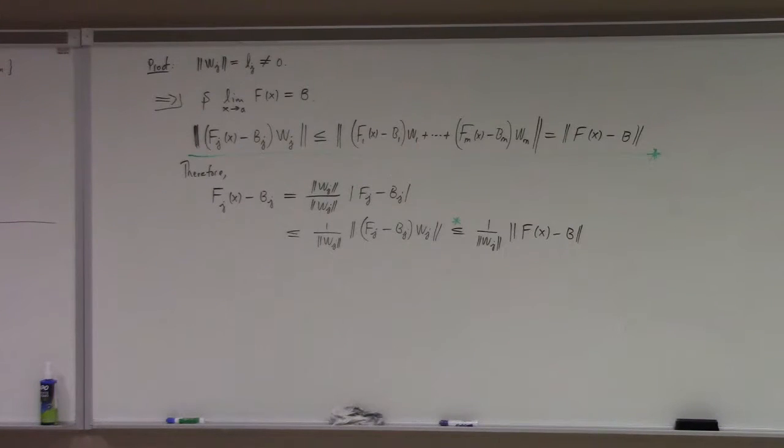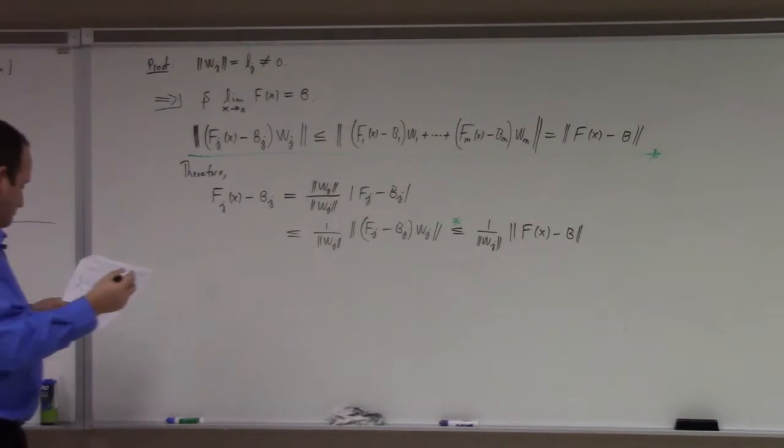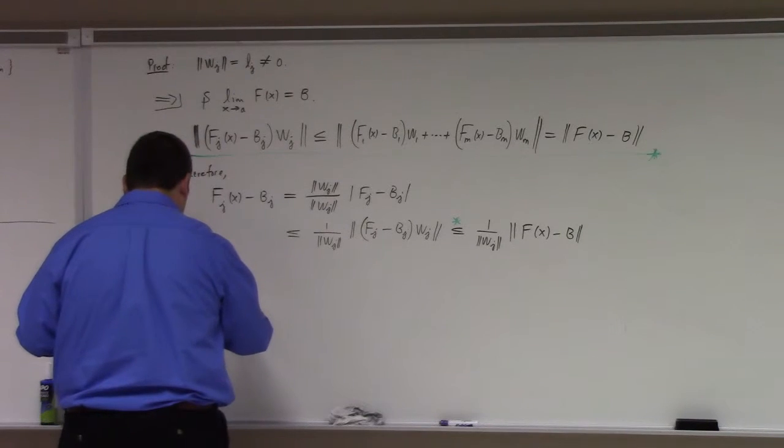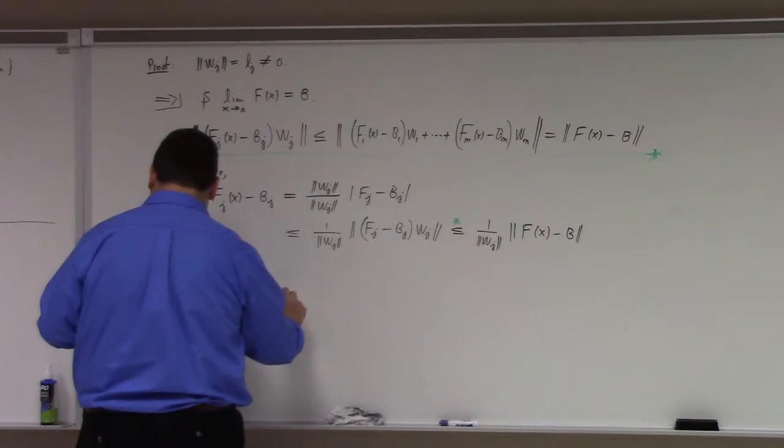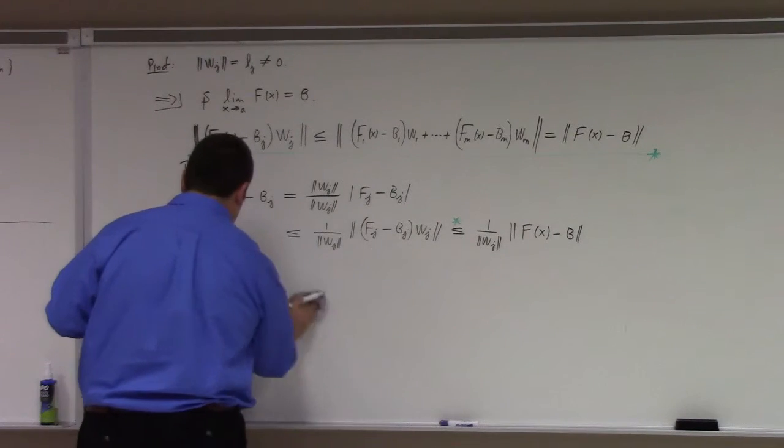That each of the limit functions, each of the component functions has a limit, and it's just the jth component of the limit. So, thus, the absolute value of f sub j, oh, sorry, I already wrote that.